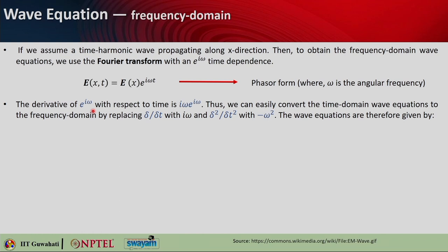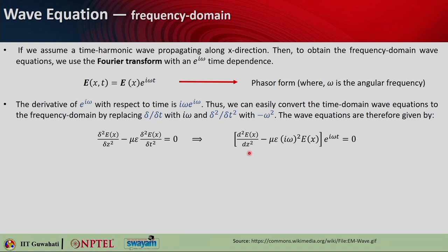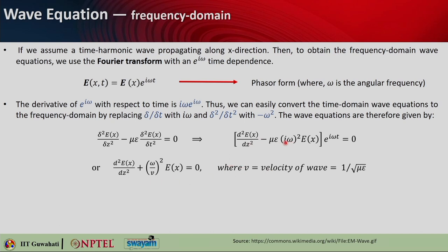Taking the derivative of e to the i omega t with respect to time gives i omega times e to the i omega t. This allows us to convert the time-domain wave equation into the frequency domain by replacing the second time derivative with i omega squared, which equals minus omega squared. The wave equation then becomes: starting from the original form, replacing the second time derivative with minus omega squared gives plus mu epsilon omega squared on the right.